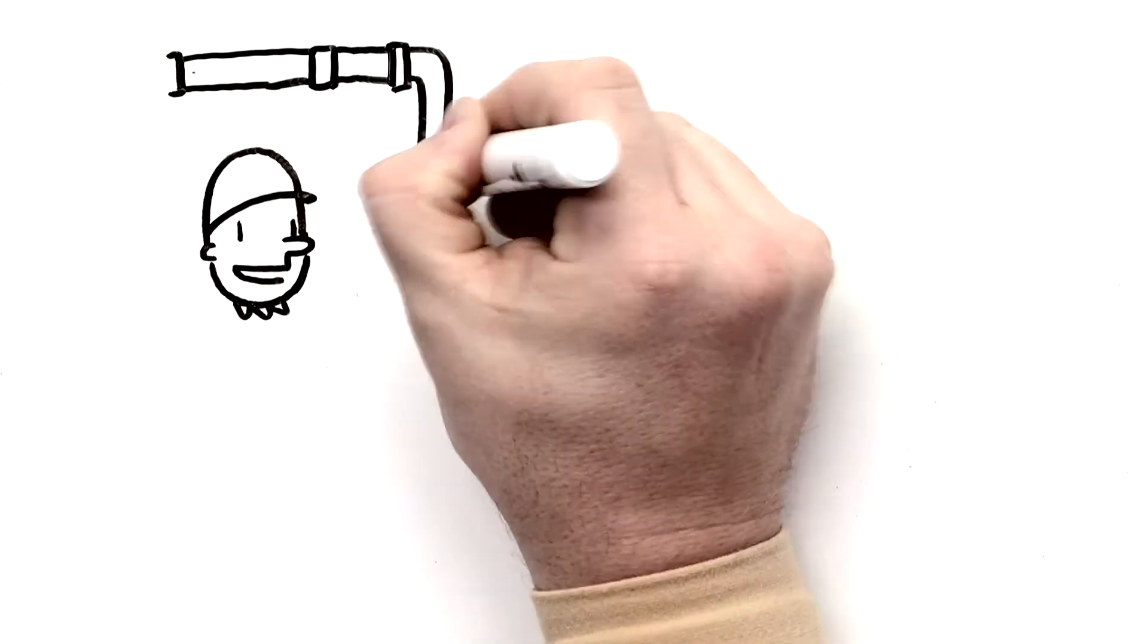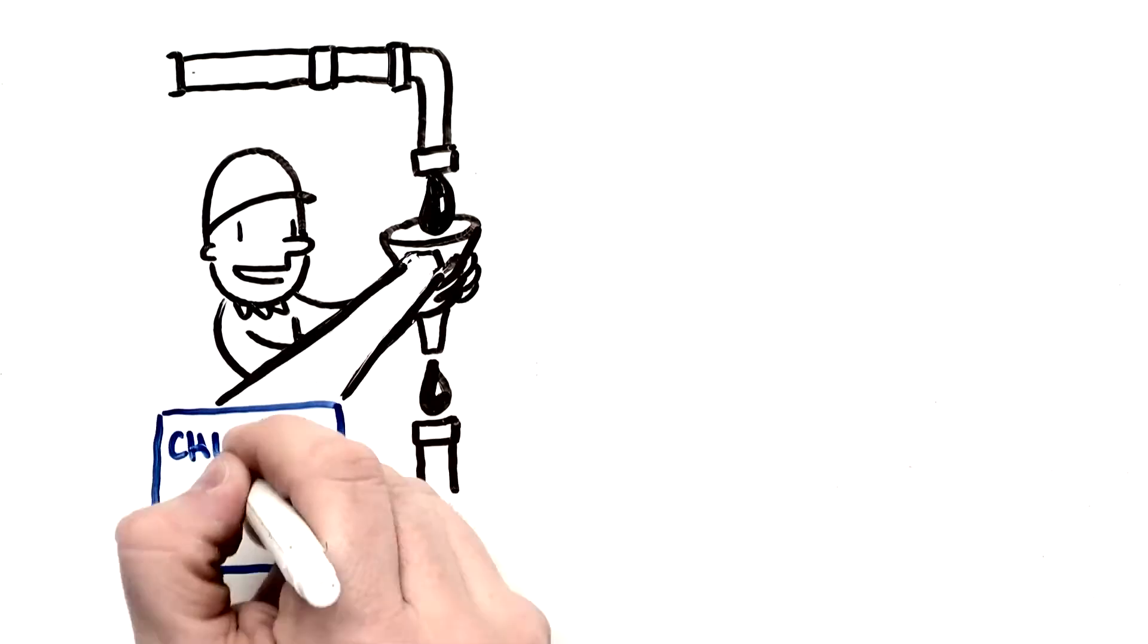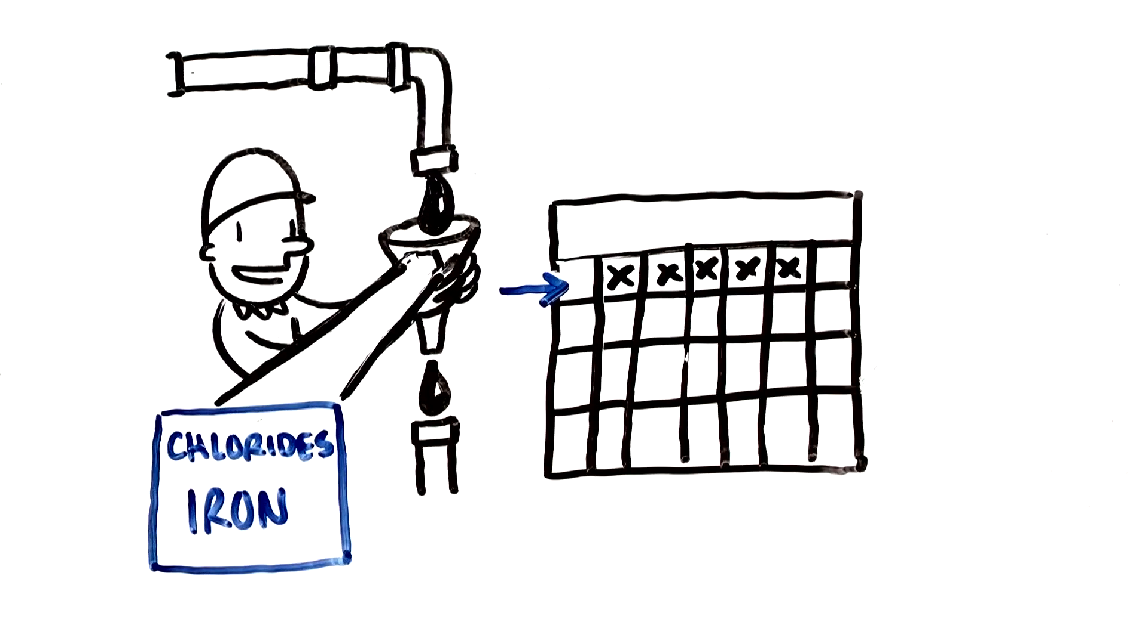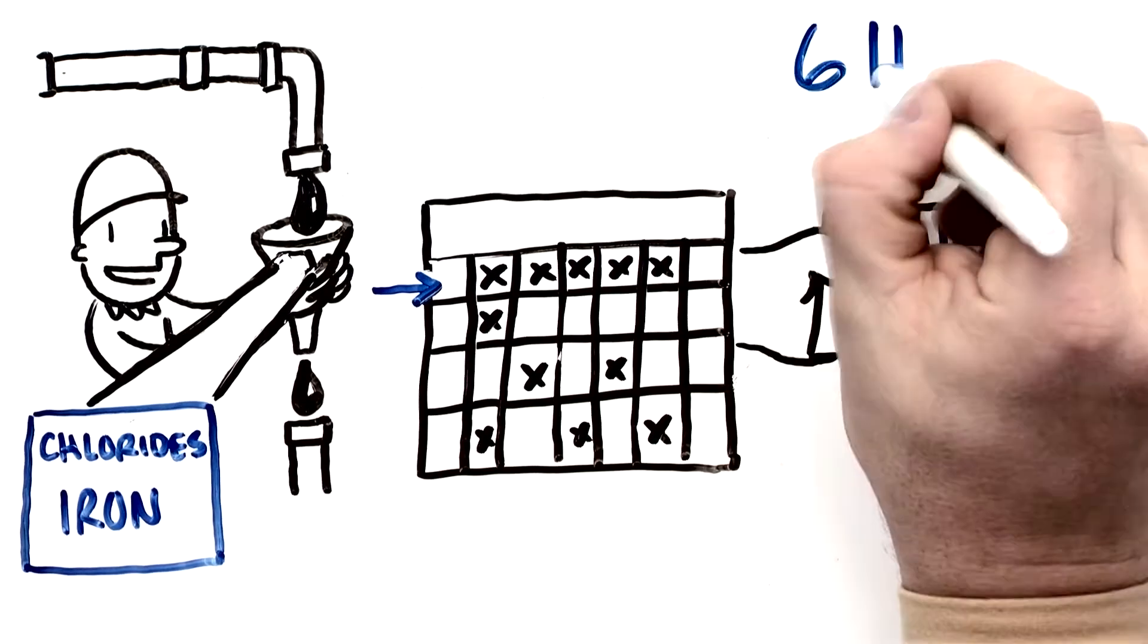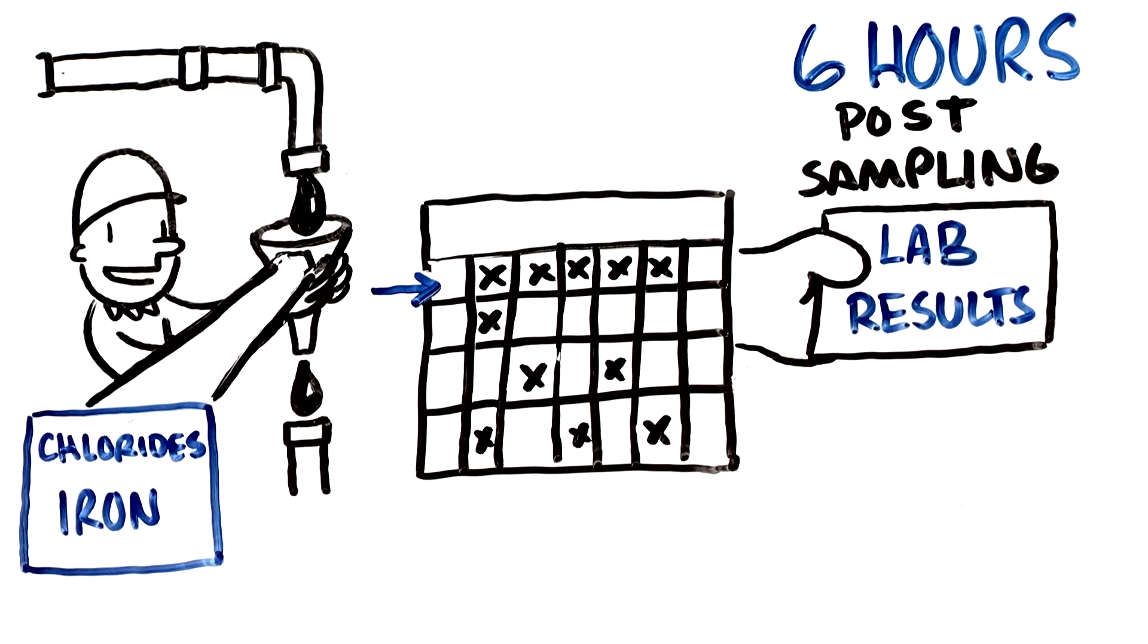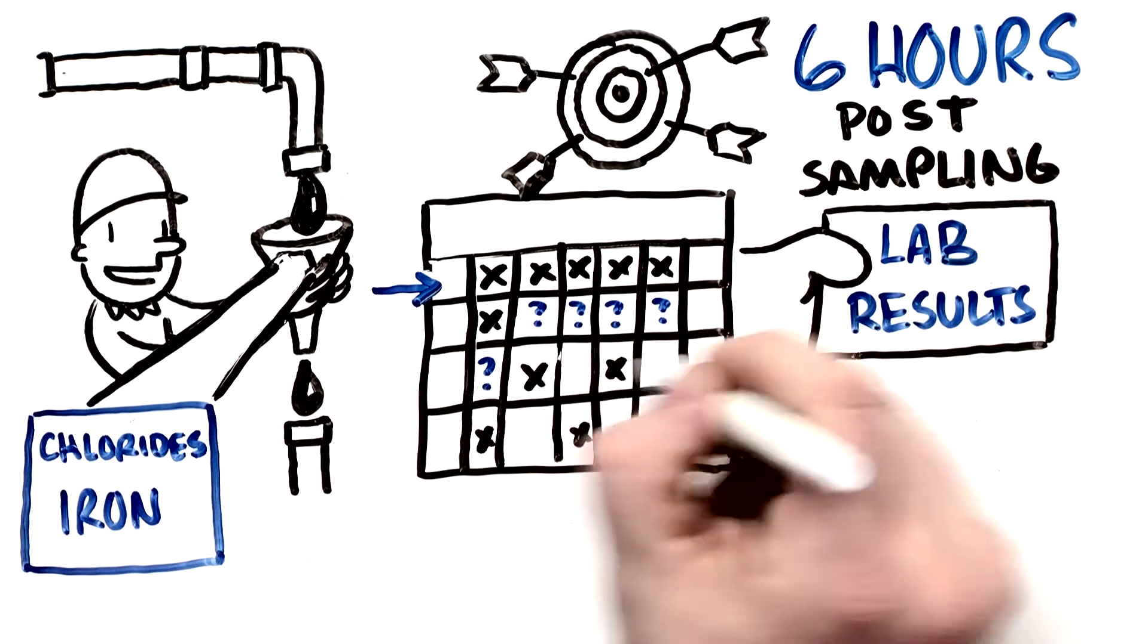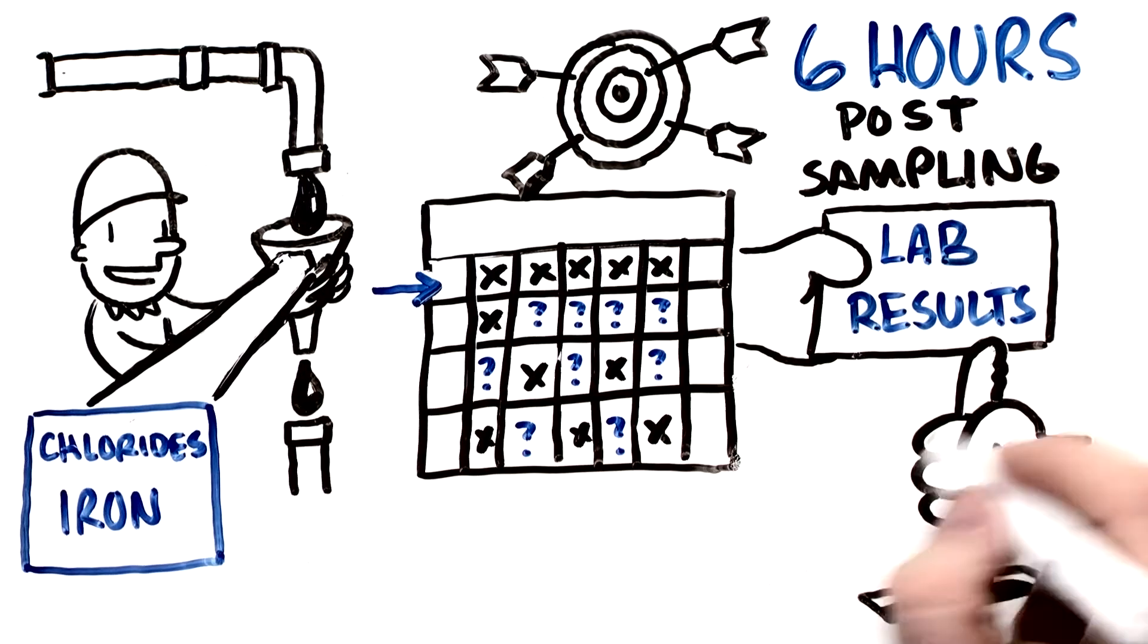The majority of refiners sample at best daily for chlorides and iron, but most sample only one to three times per week. Lab results are sometimes up to six hours post-sampling. This variability and infrequency of sample collection can have an impact on the control scheme.